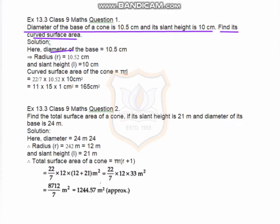Here the diameter of the base is equal to 10.5, so the radius is equal to 10.5 divided by 2, and the slant height is given as l equals 10 centimeters. We know that the curved surface area of a cone equals π r l, which is equal to 22/7 into 10.5/2 into 10.